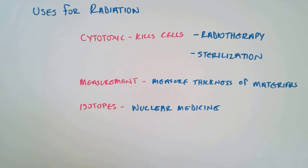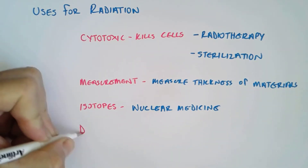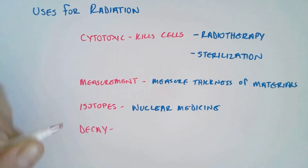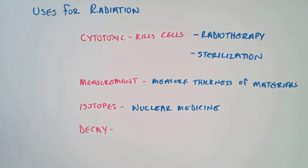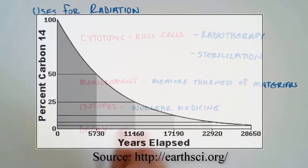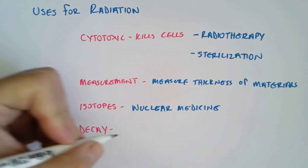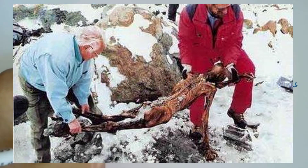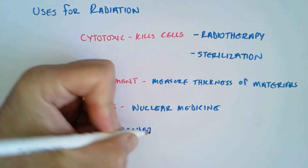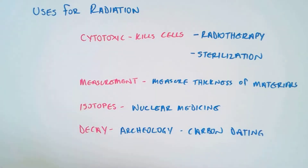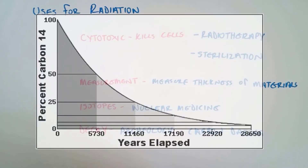Another use is the fact that radioisotopes decay and that we're able to predict very accurately the length of time it takes for them to decay. For that reason, they're able to use radioisotopes for dating in archaeology — particularly carbon-14 dating. Essentially they're looking at the proportion of carbon-14 in an artefact, and through that they're able to work out the age.